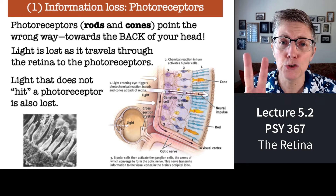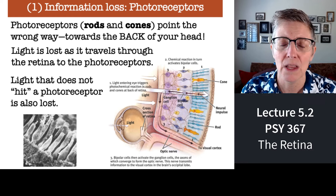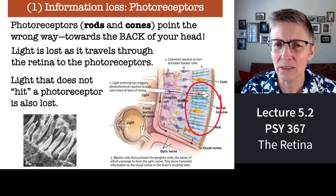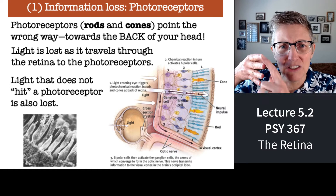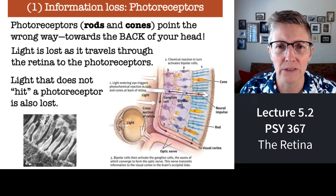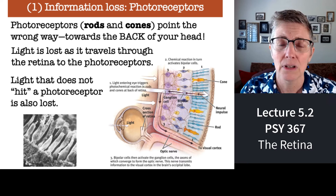Back to photoreceptors. It turns out there are two main types: rods and cones. Their names come from their shapes — one is shaped like an ice cream cone and the other like a cylinder or rod. An interesting fact about photoreceptors in your retina is that they point towards the back of your head. You'd expect them to point forward where the incoming light is, especially because what happens on the ends of the photoreceptors is really important. But those photoreceptors aren't pointed toward the light.